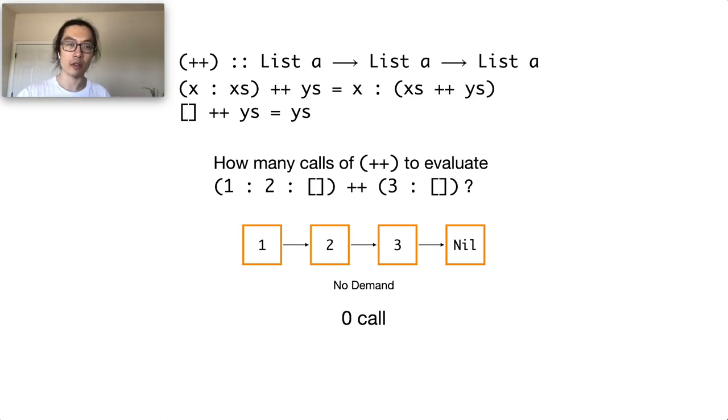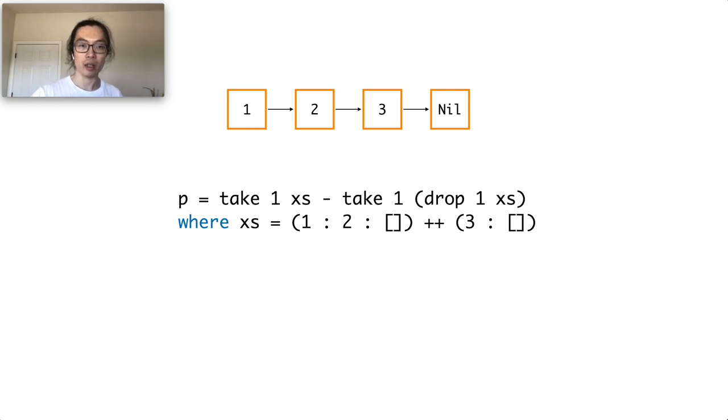To make things more complicated, we cannot know the demand of something until we use them. Let's consider the program P as an example.